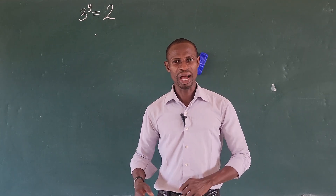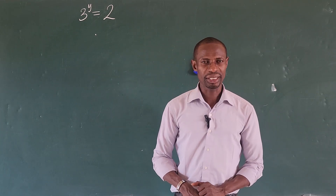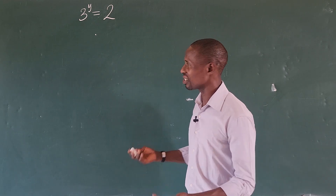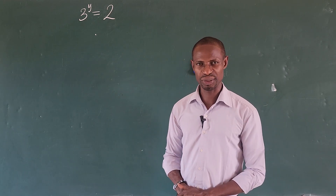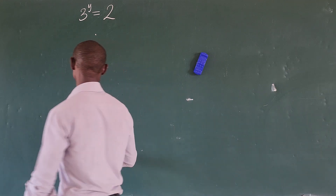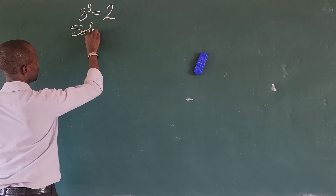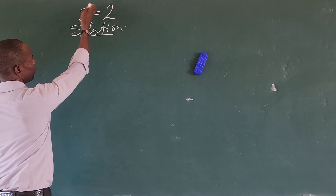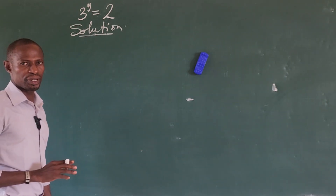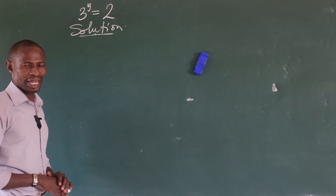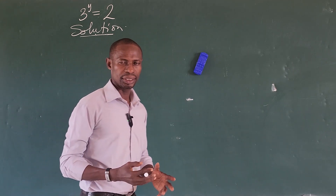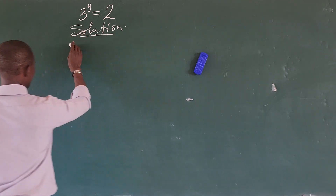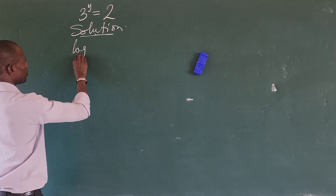Welcome to today's smart class. Today we have a simple exponential equation and we're going to solve it as quickly as possible. The equation is 3 to the power of y equals 2. What is the value of y? Here we have the variable at the exponent, so you just have to either align both sides of the equation or we take log base 10 of the equation.